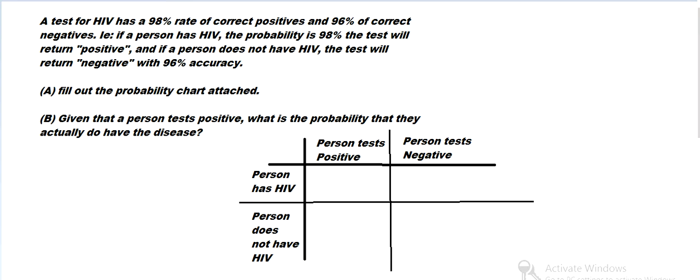Hi there, Scott again from EdgeMath. I hope all is well today. I've got a question about test accuracy rates, false positives, and so on. A test for HIV has a 90% rate of correct positives — so if a person has HIV, the probability is 98% that it tests positive — and then 96% of correct negatives. So if a person does not have HIV, it will return negative 96% of the time, or positive 4% of the time.